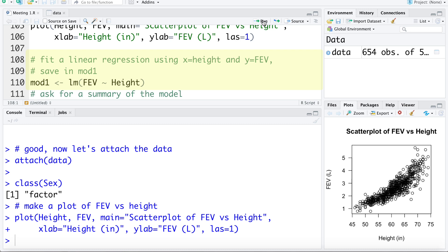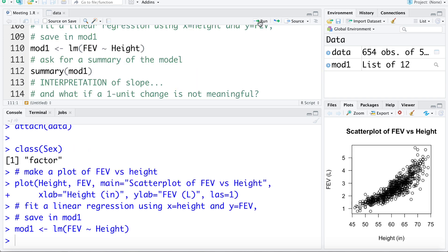I'm going to fit a model and save it in an object called mod1. To do so I'm going to use the lm command, the linear model, estimate FEV using height. Now let's take a look at a summary of that model.